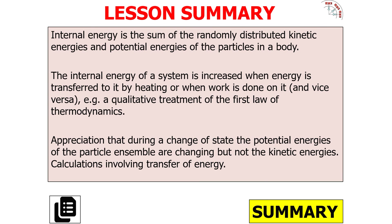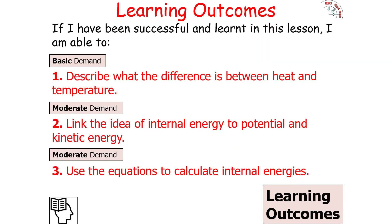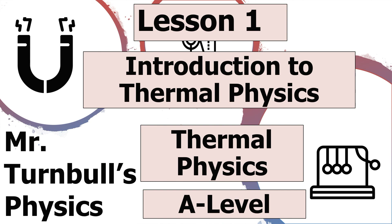To summarise: internal energy is the sum of the randomly distributed kinetic and potential energies of the particles in a body. The internal energy of a system is increased when energy is transferred to it by heating or when work is done on it, and vice versa — the first law of thermodynamics. During a change of state, the potential energies of the particles are changing but not the kinetic energies. Thank you very much for watching today's lesson on an introduction to thermal physics, part of the AQA A-level physics course.